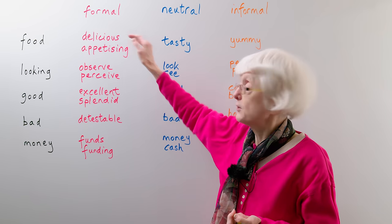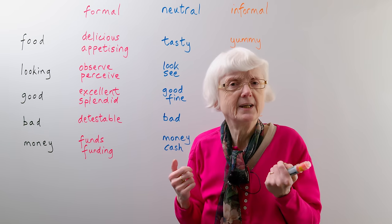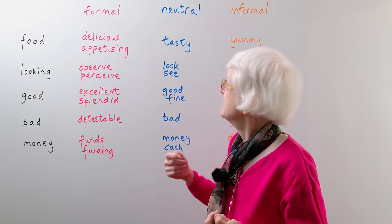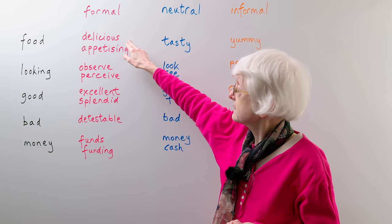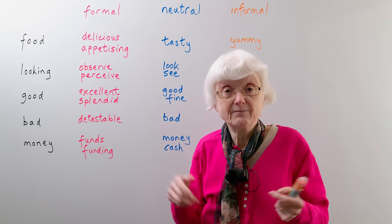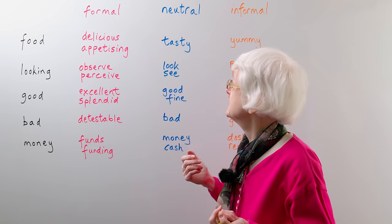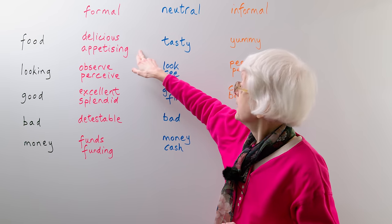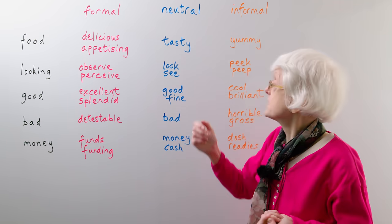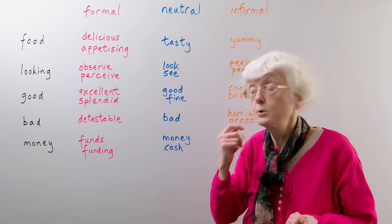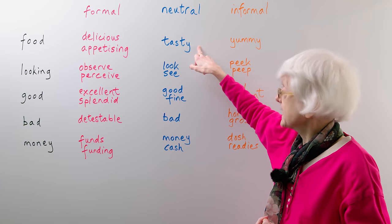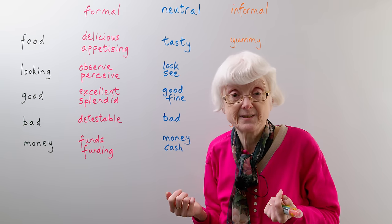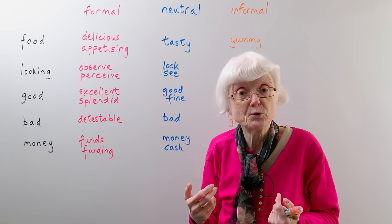Delicious isn't quite so formal — you can just about say 'this food is delicious' in a social setting and it's okay. It's also used in advertising slogans like 'delicious apples.' So it's not that formal, but appetising is more formal. If you want to use a neutral word to describe the food, if it tastes nice, you can just say it's tasty — 'this food is very tasty' — which is a fairly neutral way of saying something nice about the food.